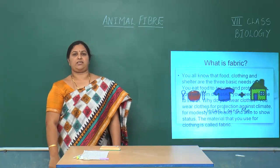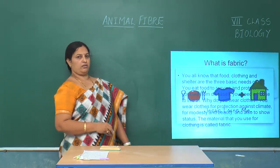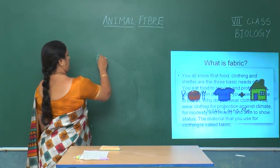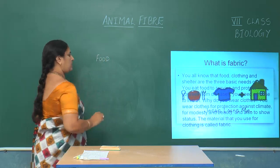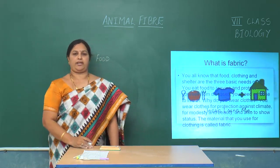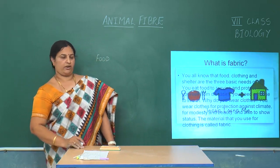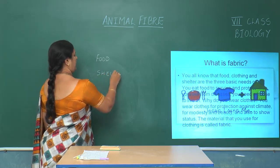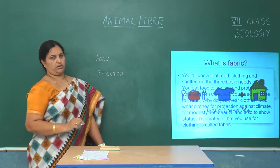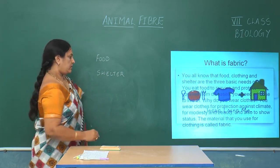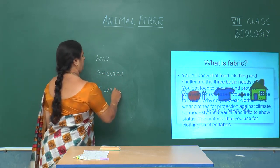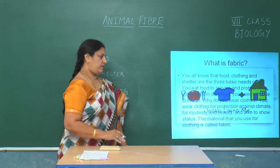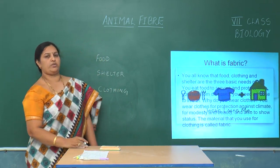The primary necessities of man are food, shelter and clothing. We require food to survive and to protect against diseases. We require shelter to live in. We require clothing for protection against climate, for modesty, beauty and also to show status.